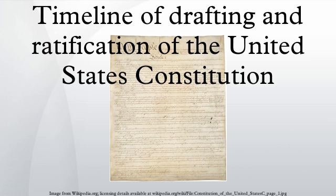March 25, 1785: Mount Vernon Conference convenes. Delegates representing the states of Maryland and Virginia meet, initially in Alexandria, Virginia and then at Mount Vernon, the Fairfax County home of George Washington, to address issues of commerce, fishing, and navigation in the waters of the Potomac and Pocomoke Rivers and the Chesapeake Bay.